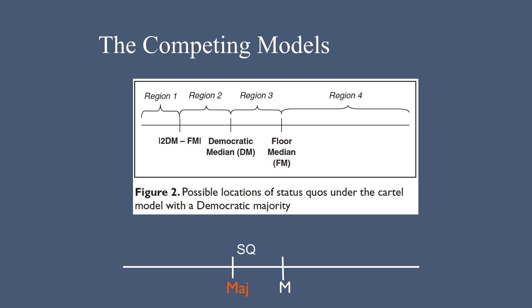Here is an example where the status quo is in Region 3. Here, the floor model predicts the outcome at M, while the party model predicts the outcome stays at status quo. It stays at SQ because the MAJ pivot blocks it from moving. Any status quo in Region 3 stays put and doesn't change.